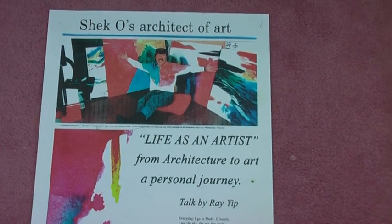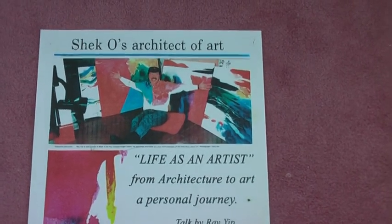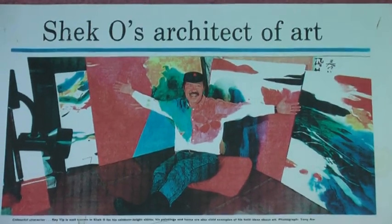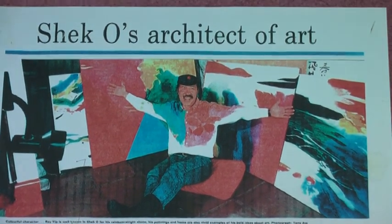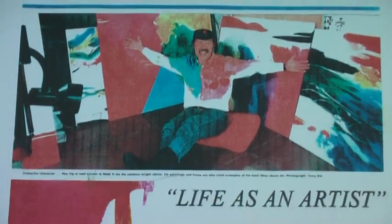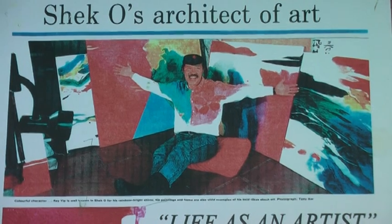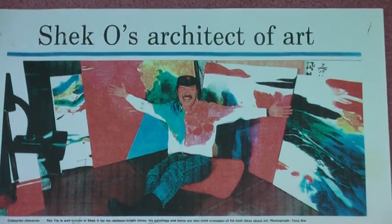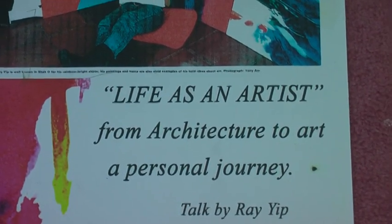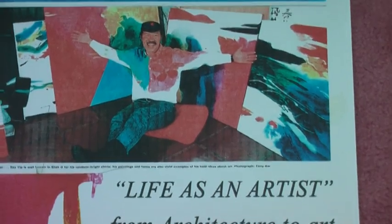Ray, what's this poster all about? I'm the Shek O — the title is 'Shek O Architect of Art.' And the three words are the most important in my life, very key words of me. I'm born in Shek O, I'm an architect, I'm an artist. Here we are — I'm immersed in a bunch of color pictures, even including my shirt. The poster is about life as an artist. I have made a talk to the Institute of Architects and a lot of students as well. That's the poster.